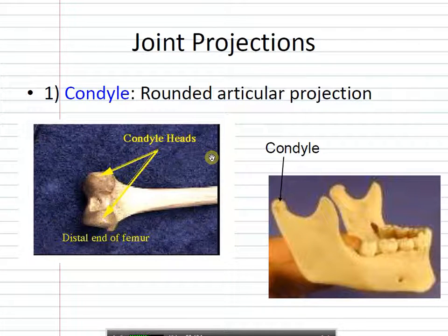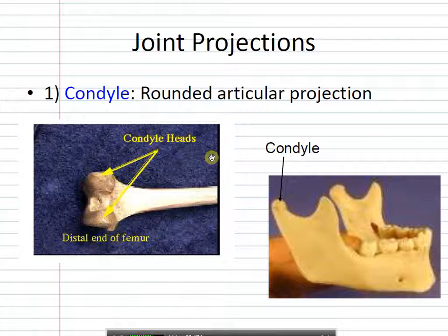Projections — things that pop out. Condyles are large, rounded projections. On the femur, down here at the very end, you can see where it forms the knee. You have these two large, round, smooth condyles for pivoting on the tibia.